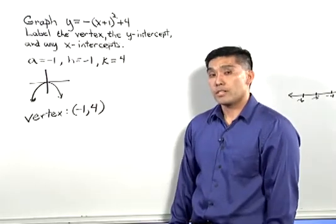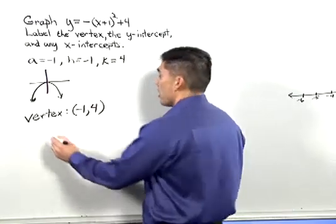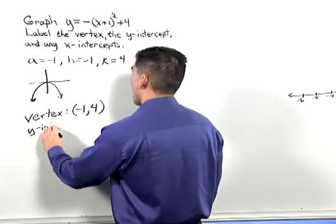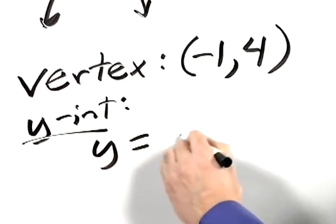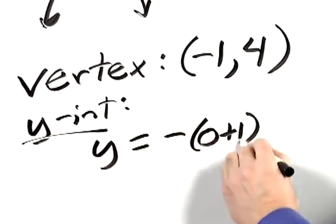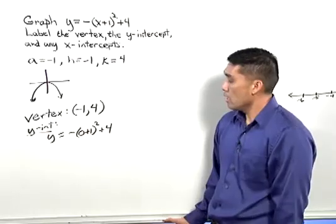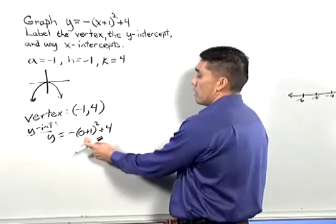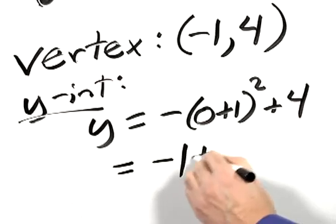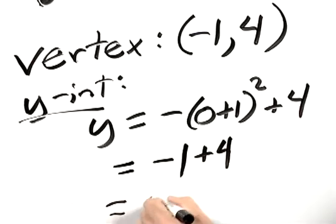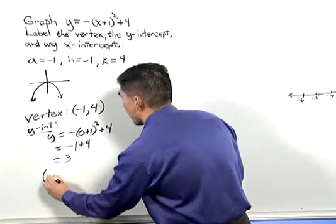Now that we know the vertex, let's find the y-intercepts and the x-intercepts. The y-intercept, we let x equal 0. So y equals negative 0 plus 1 squared plus 4. 1 squared is 1, but with the negative out front, leaves us with negative 1 plus 4, so y is equal to 3. So the y-intercept is 0, 3.